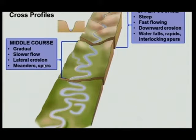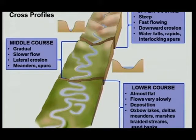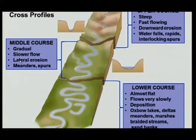Remember that a spur is a high-lying area between two rivers — not, as one student wrote in an exam, 'people with a taste for life.' See that you give the correct geographical definitions. The lower course is almost flat and the water flows very, very slowly, so you're going to have deposition. To summarize: upper course — downward erosion; middle course — lateral erosion towards the side; lower course — deposition. In the lower course you'll find oxbow lakes, deltas, meanders, marshes, braided streams, and sandbanks.